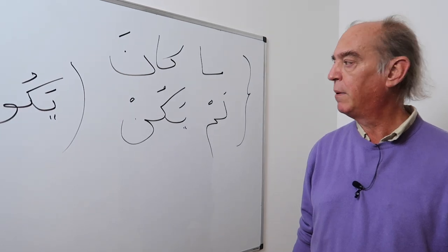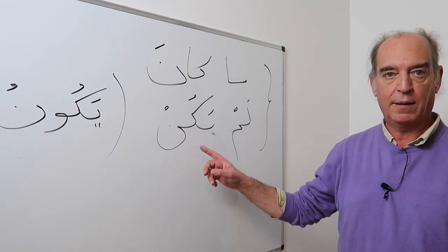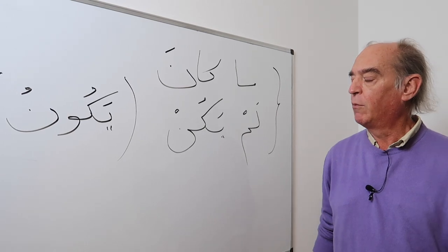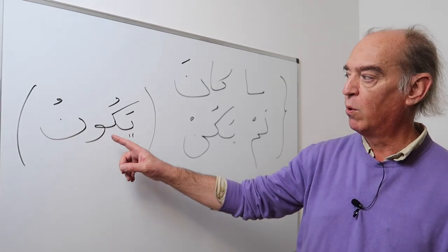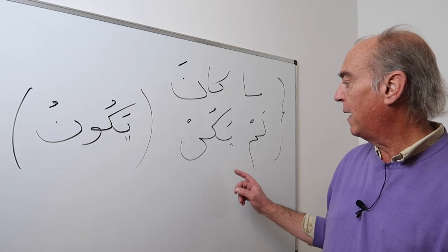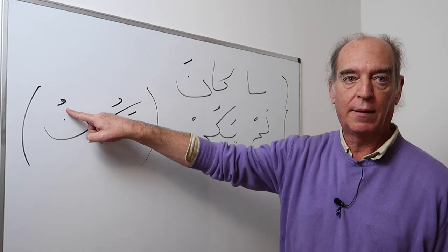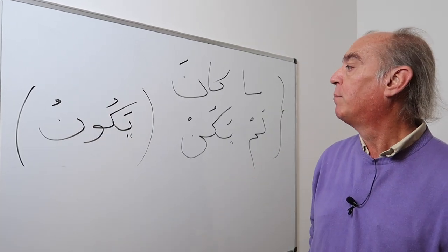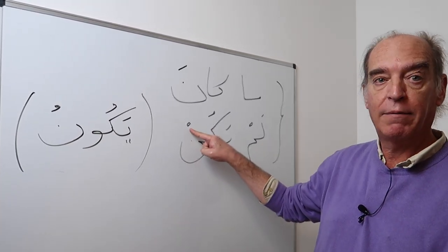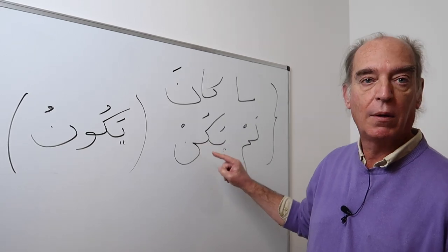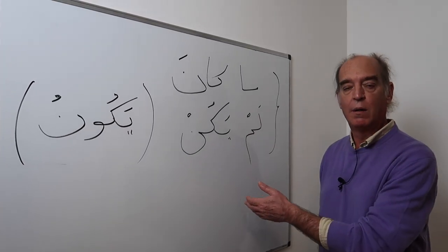Yakun is a present form, which normally is yakunu with waw. So in the jussive mode, you have to put a sukun instead of the damma. But before a sukun, you cannot have a long vowel, so the waw goes away. Lam yakun: he was not.